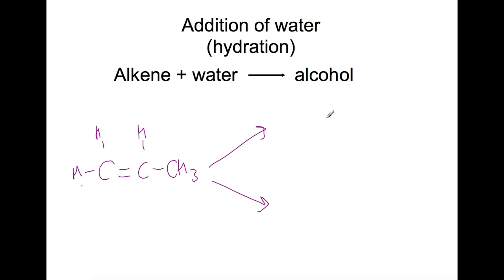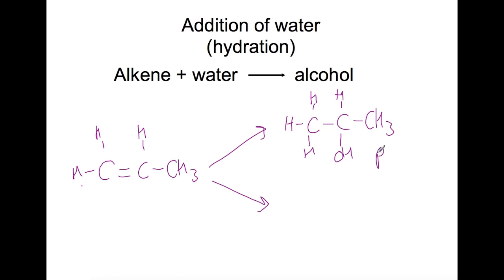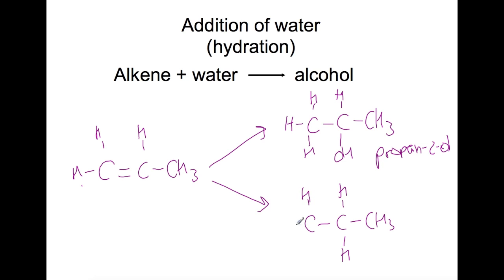You can see this when you name the isomers that form. If we add the hydrogen onto this carbon and the OH onto this carbon, we get propan-2-ol. However, we could also add the hydrogen onto the middle carbon and the OH onto the end carbon and get propan-1-ol. This only happens for asymmetrical alkenes.